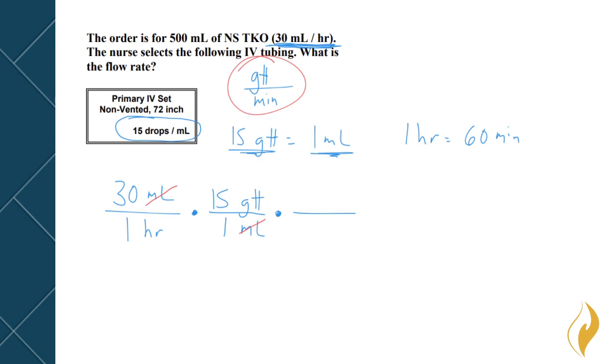And here because the hours are currently on the bottom of the fraction, that means I need to put hours on the top of my conversion fraction so that they can cancel. One hour goes on top and 60 minutes goes on the bottom. That makes it so that these two hours can cancel with one another. And my remaining unit is going to be drops on the top per minute on the bottom, which again is the standard unit for the flow rate.